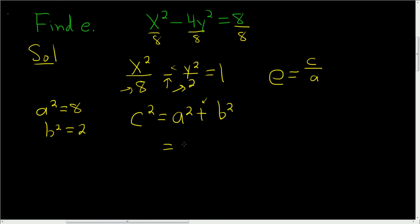a squared is 8, b squared is 2. So we get c squared equals 10. So c is going to be the square root of 10.